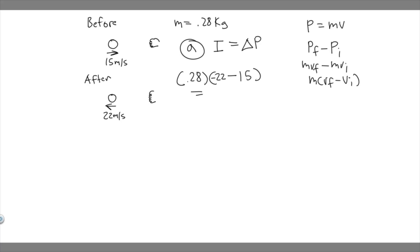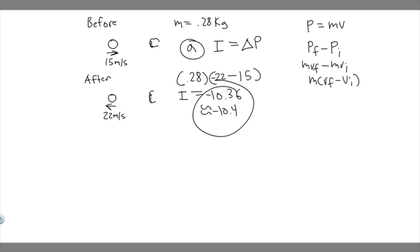So we compute 0.28 times (−22 − 15), which gives us the impulse I equal to −10.36, which we can round to −10.4. The units for impulse are Newton-seconds, so the answer to Part A is −10.4 Newton-seconds.